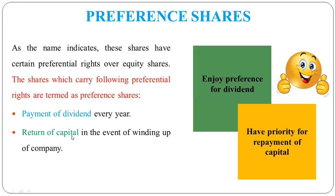What are these two things? The shareholder has invested in the company, so every year the company gives them dividend. When the company is closed, the capital is returned, because the company used this money for business. When the company is closed, they have to return the money — or after a fixed number of years, they return the money to the shareholders. These two things define preference share.